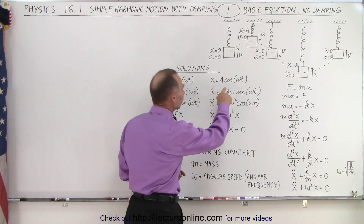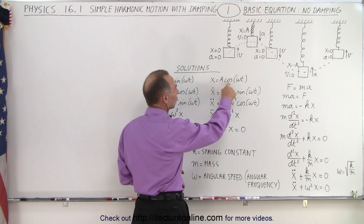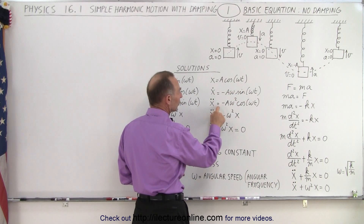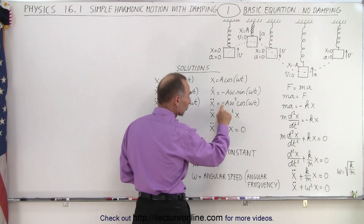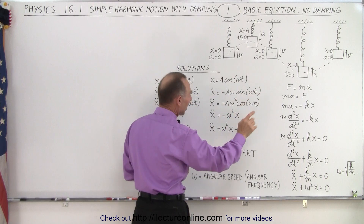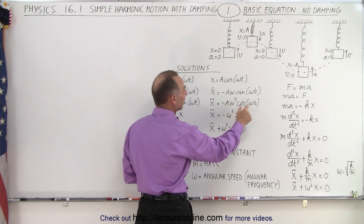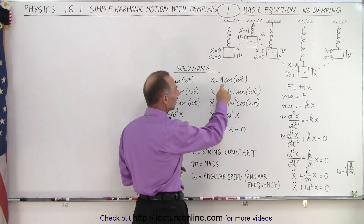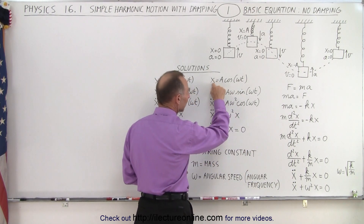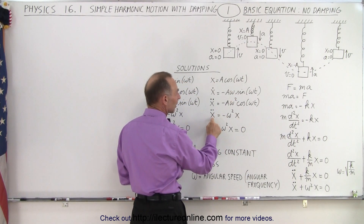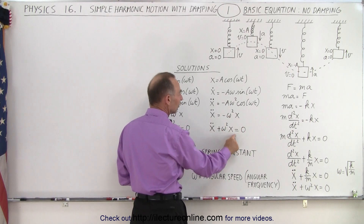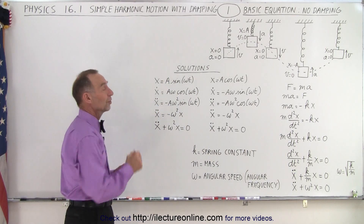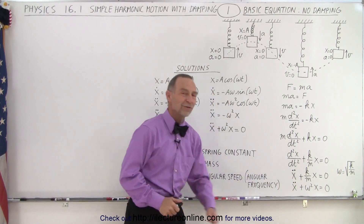We can do the same with the cosine function. Taking x = A cos(ωt), the first derivative is −Aω sin(ωt). The second derivative: the derivative of sine is cosine, and we already had a negative, so x̄ = −Aω² cos(ωt). Since A cos(ωt) equals x, we substitute to get x̄ = −ω²x. Moving to the left side gives x̄ + ω²x = 0, confirming that x = A cos(ωt) is also a solution to this differential equation.